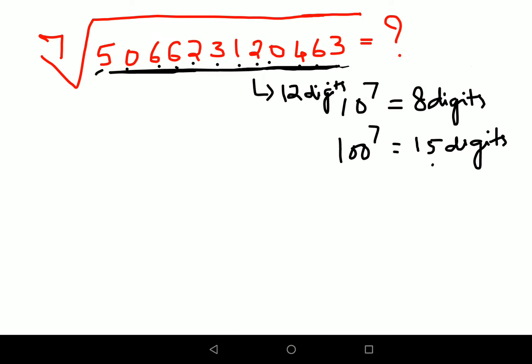So now, we can say that this will have 2 digits, which is, let's say, a and b. Now, let's talk about the b part. See, last digit is odd. So this is an odd number.